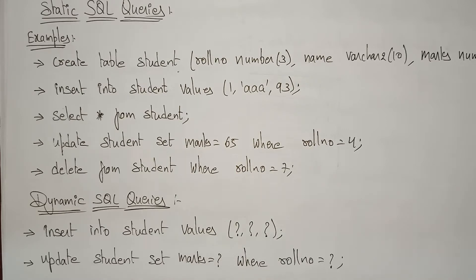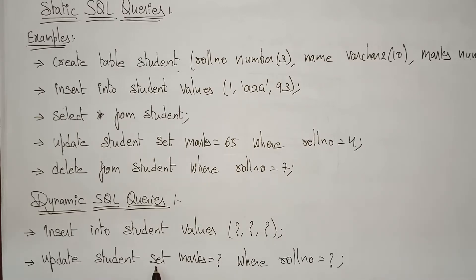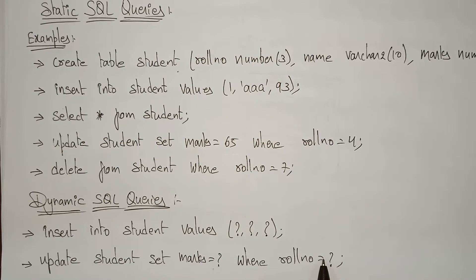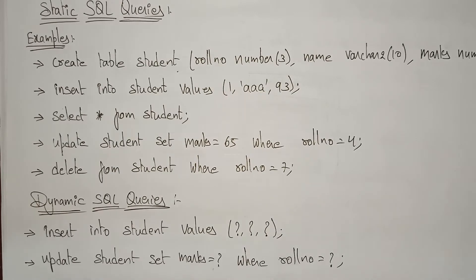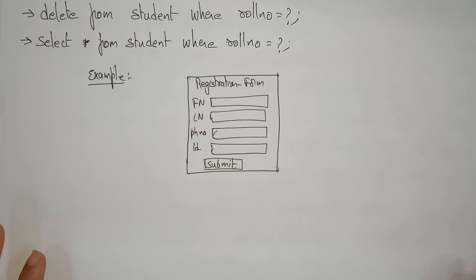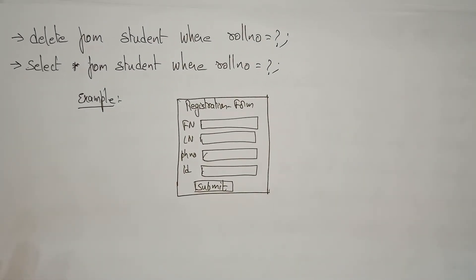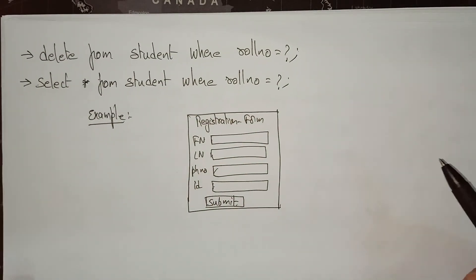Suppose you want to update student data — you don't know what the user is trying to update. They might want to update their name, their address — you don't know, and you don't know what value they are giving either. So that's why we write 'update student set marks = ? where row_number = ?'. For delete, it's 'delete from student where row_number = ?'. These types of queries are called dynamic queries.